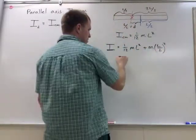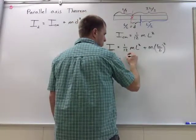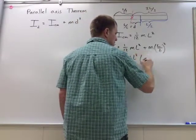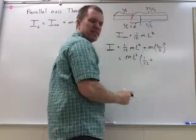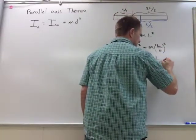We can factor out some common terms. I have m l squared times one-twelfth plus, and here I have six squared, so thirty-six, so one-thirty-sixth.